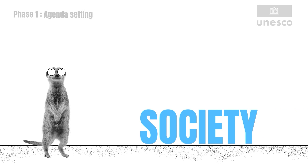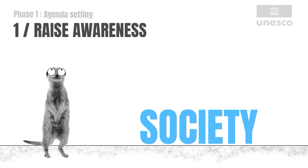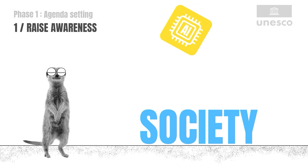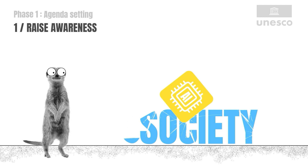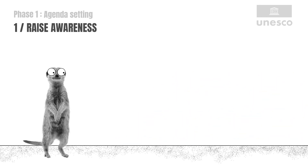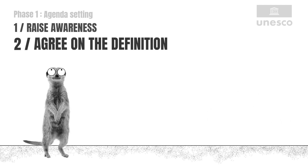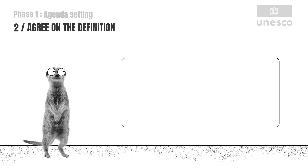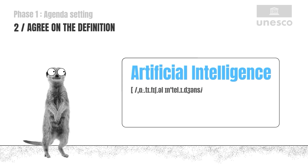Phase 1: Agenda Setting. Building block 1: Raise awareness of the impact of AI on society. The public can't contribute to AI policy without knowing its impacts and limitations. Building block 2: Agree on a definition of AI to be used during the policy process. Amazingly, there's no universally accepted definition of AI.